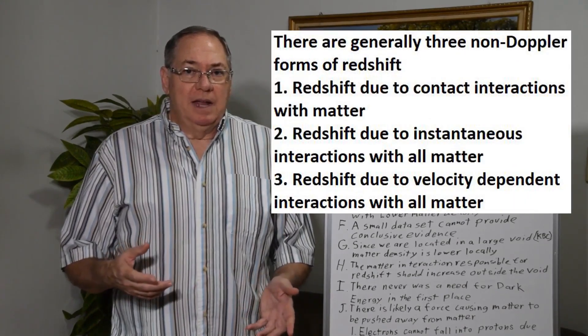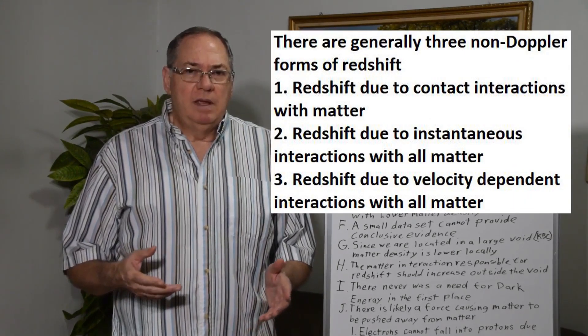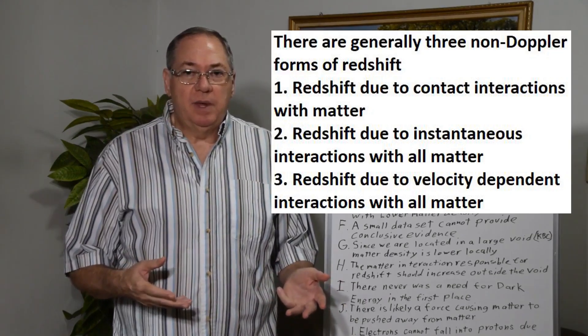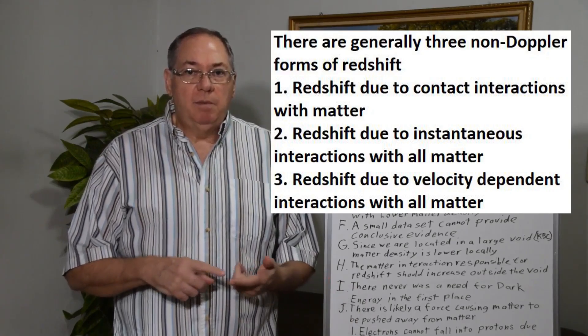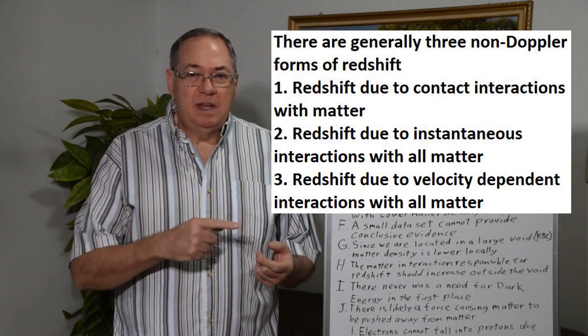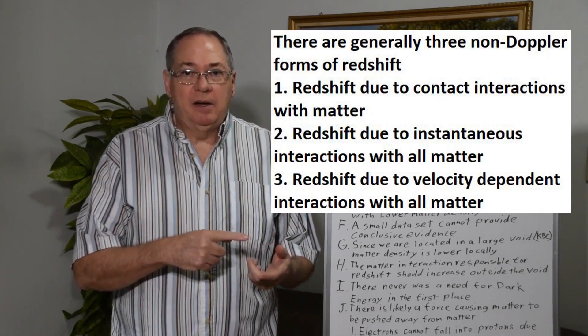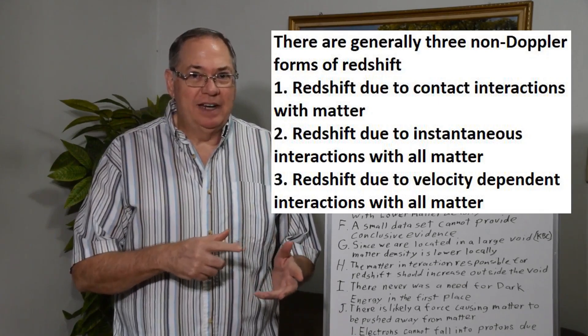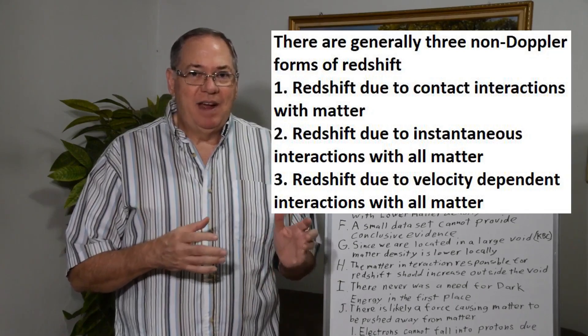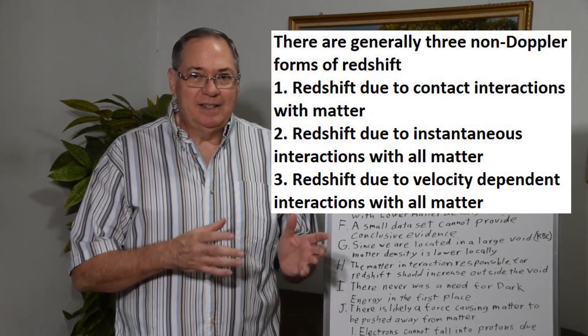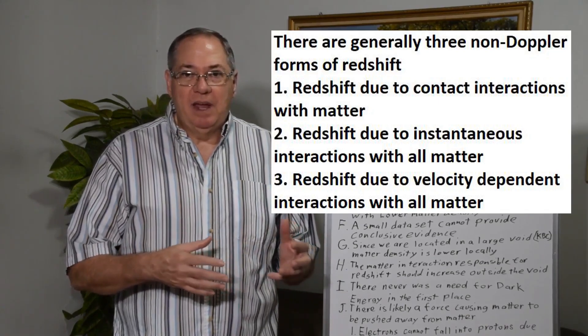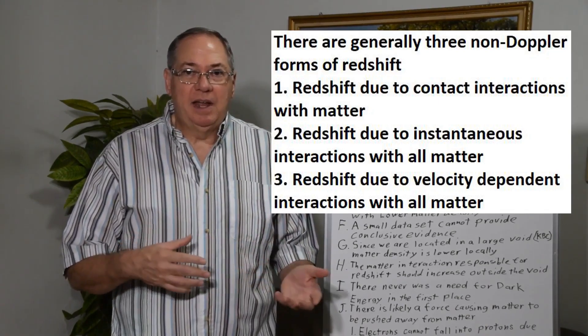So there may be some sort of interaction that decreases at larger distances. Now this brings about that there's three basic types of possible redshift interactions. One would be direct contact interactions where the photon essentially hits matter, but somehow without scattering and that causes redshift. In that case you have a highly matter density dependent mechanism.